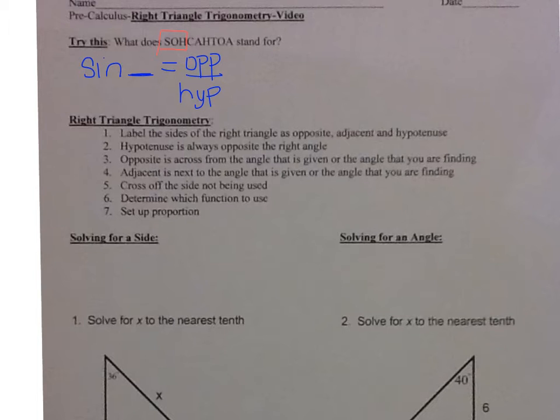All right, the next one, CAH. So that's cosine of an angle is equal to A is the adjacent over H, which is the hypotenuse.